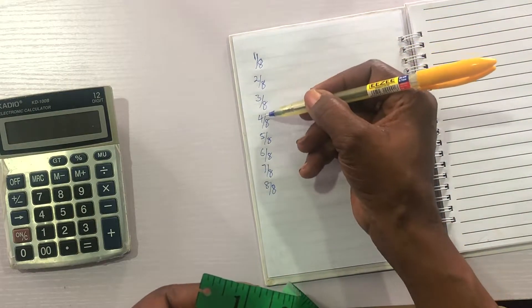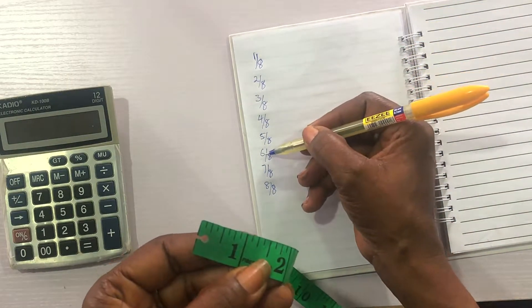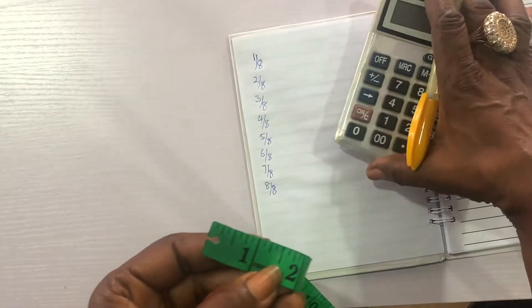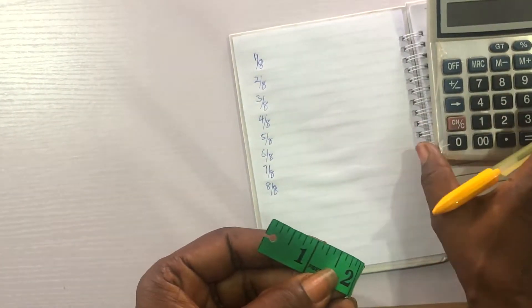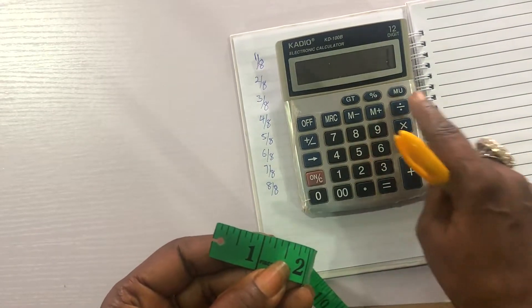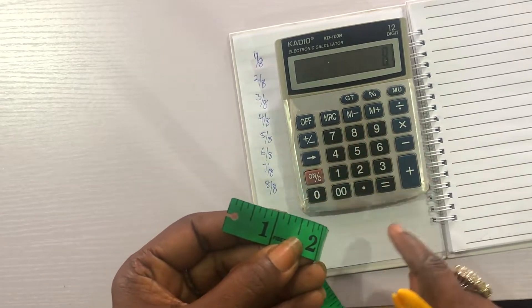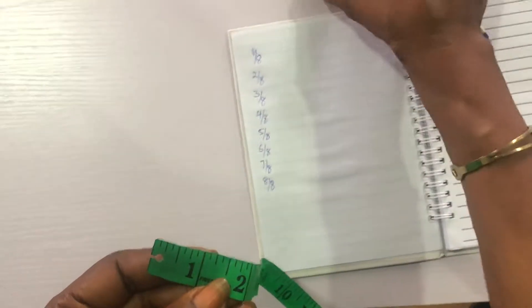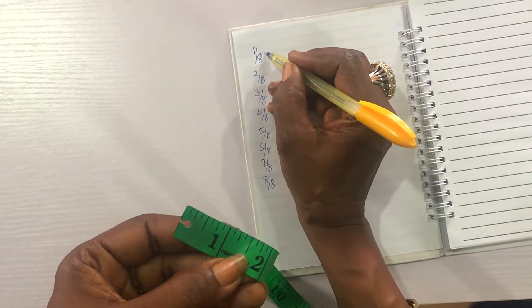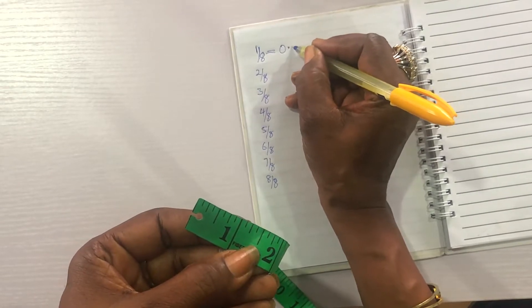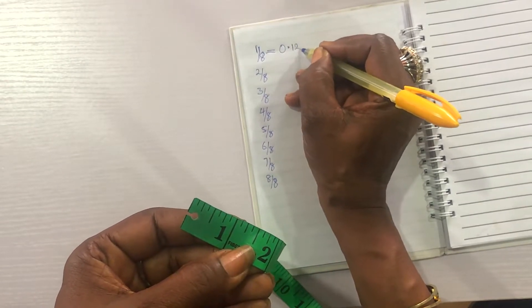One eight, two eight, three eight, four eight, five eight, six eight, seven eight, eight eight. So when you convert this one eighth, it's all eight. All you need to do here is one divided by eight, equals to 0.125.